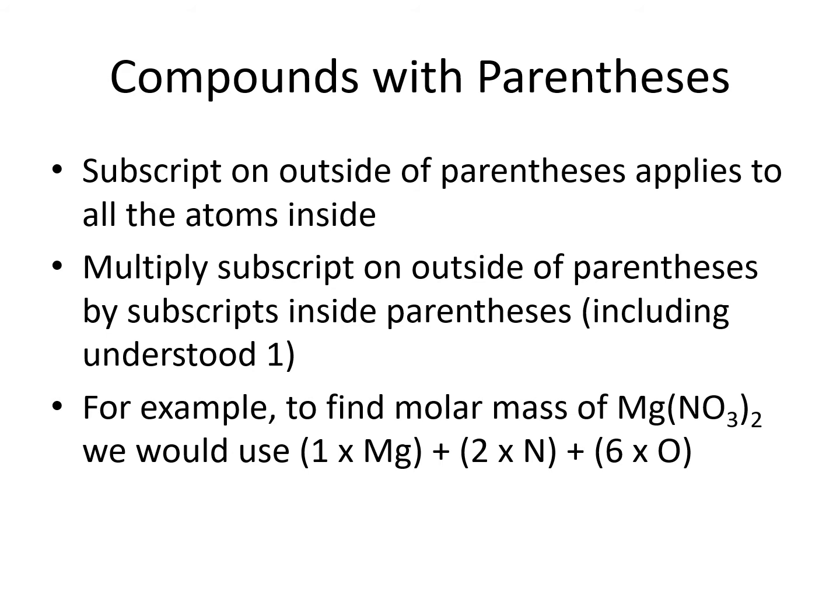When a compound contains parentheses, take the subscript on the outside of the parentheses and multiply it by the subscripts on the inside of the parentheses to find out how many of each element the compound contains. For example, to find the mass of magnesium nitrate, you would take the subscript of 2 and multiply it by the understood subscript of 1 on the nitrogen to get 2, and multiply it by the subscript of 3 on the oxygen to get 6.